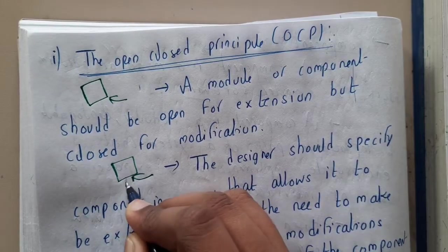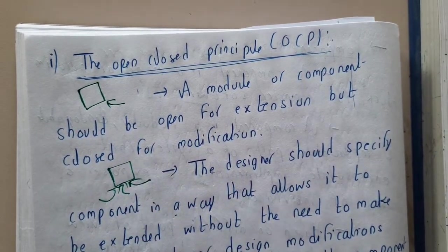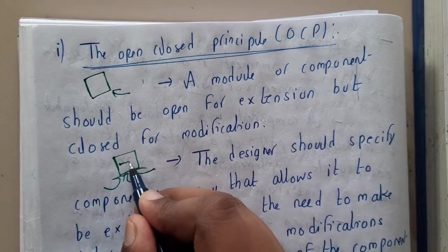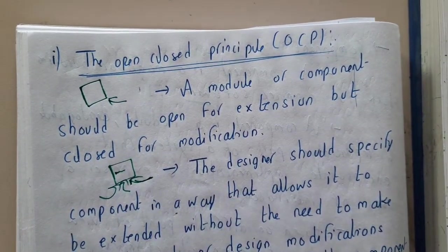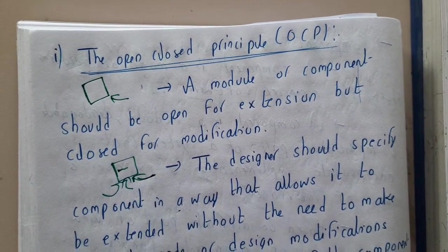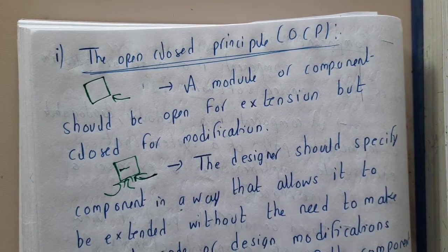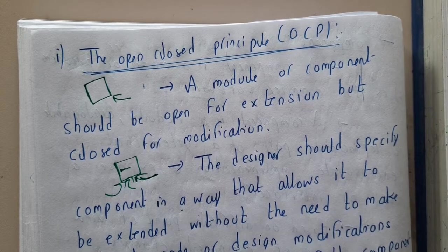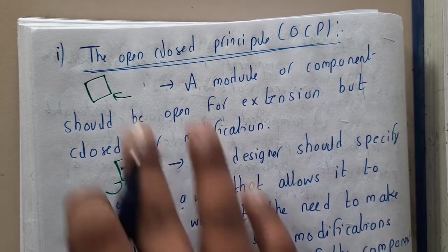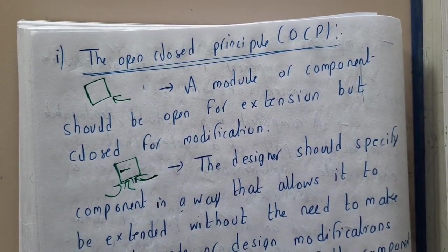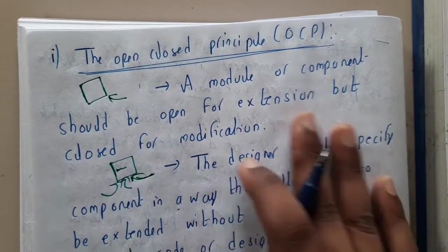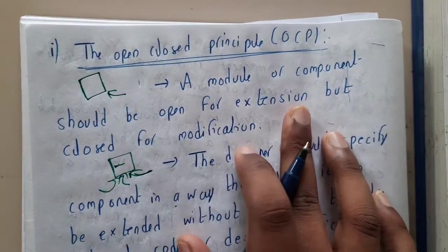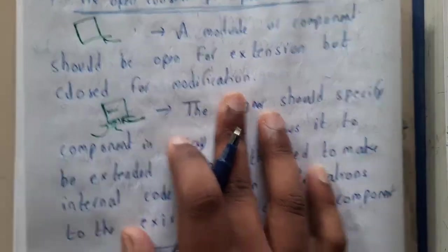Whenever you want to add a functionality, you should be able to directly add it without modifying existing code. You should be freely able to add one more component, one more module, or one more function into the module without any issue. A module or component should be open for extension but closed for modification.